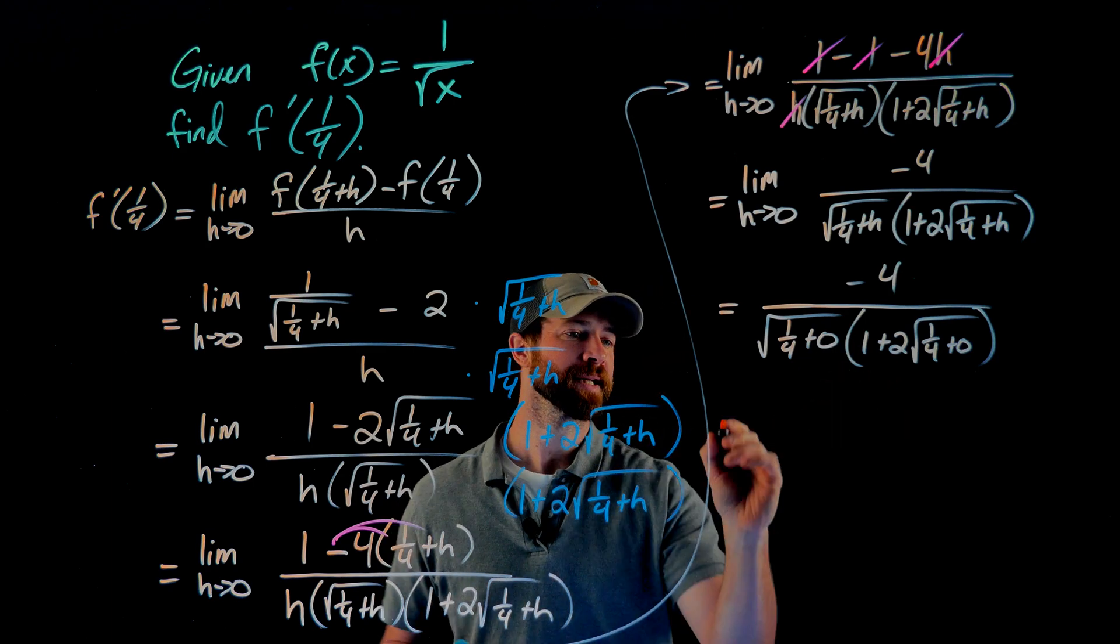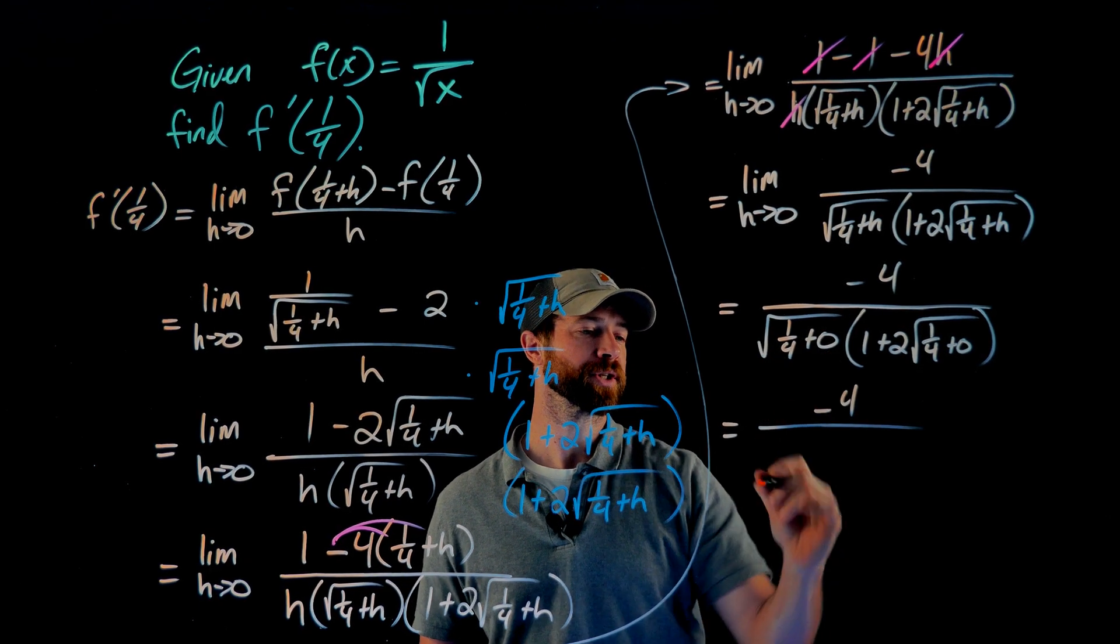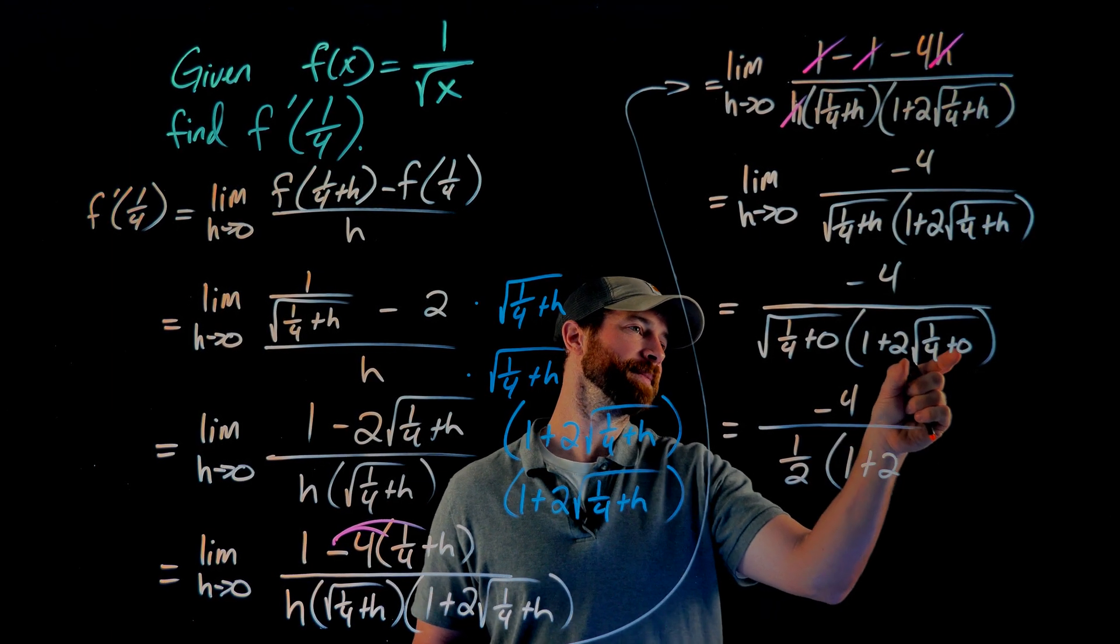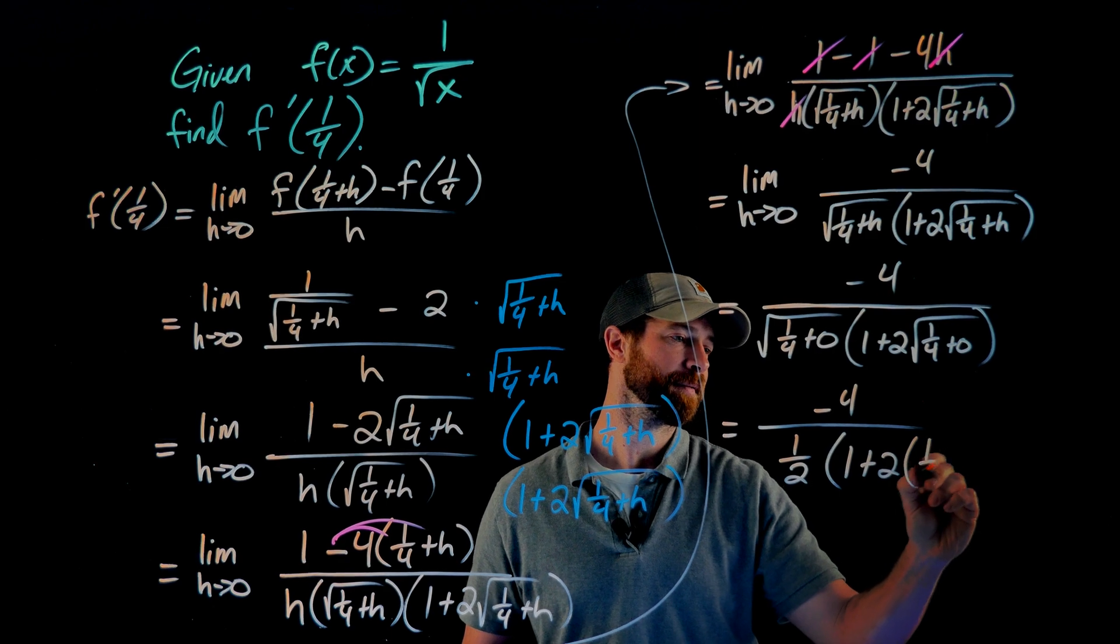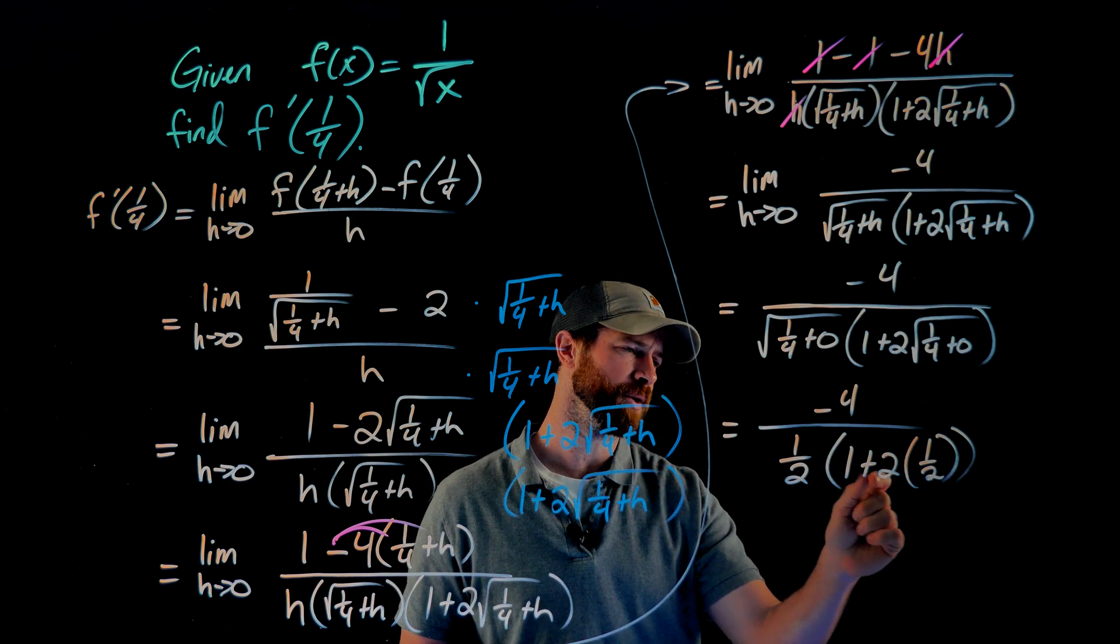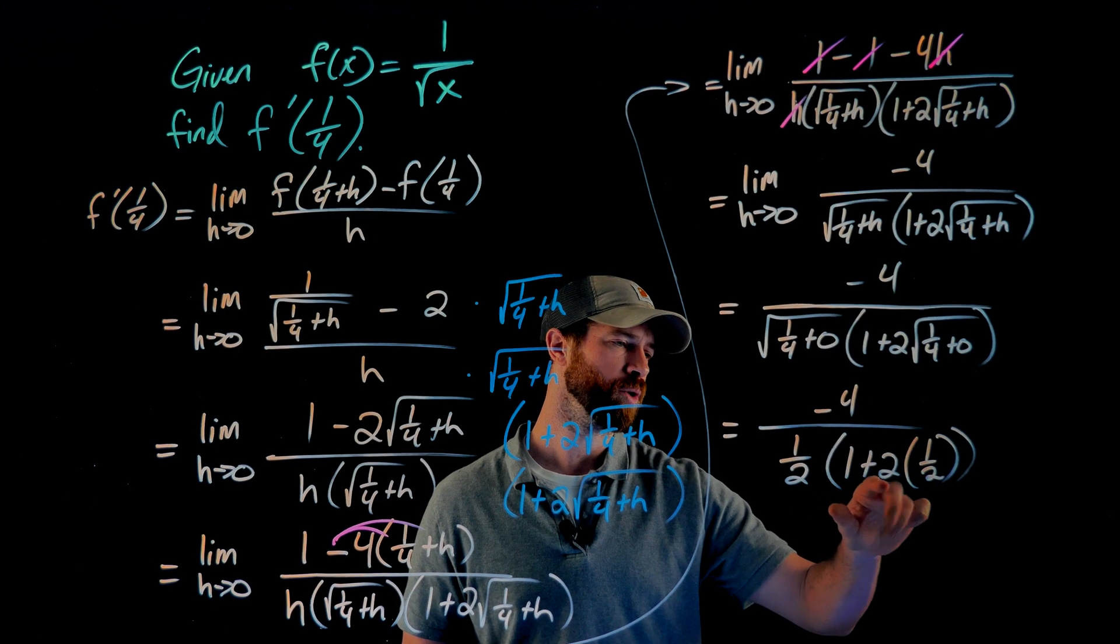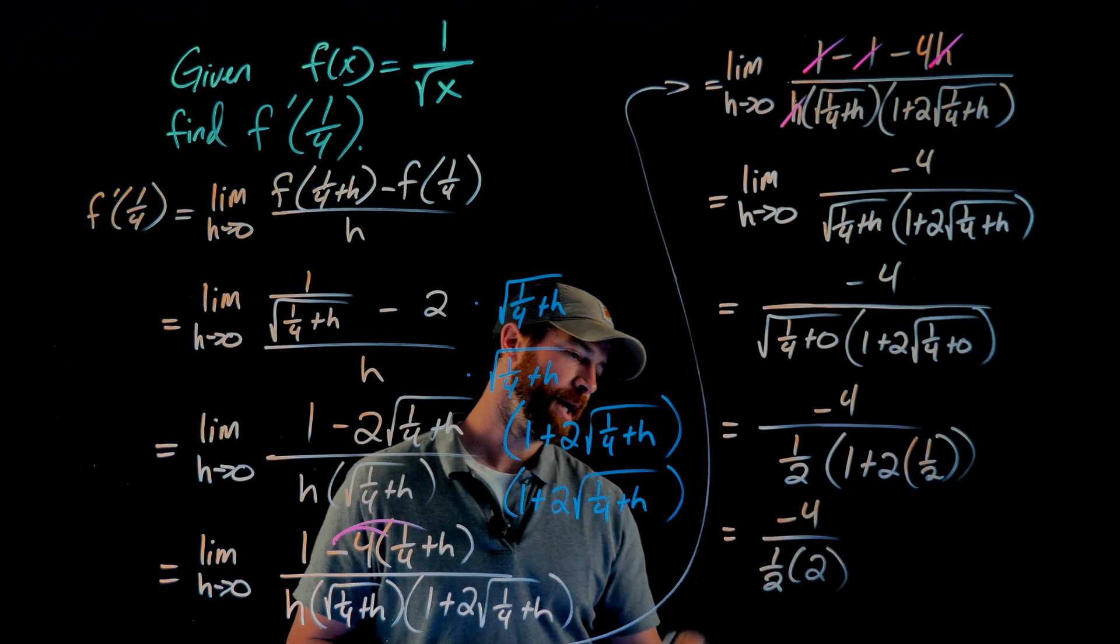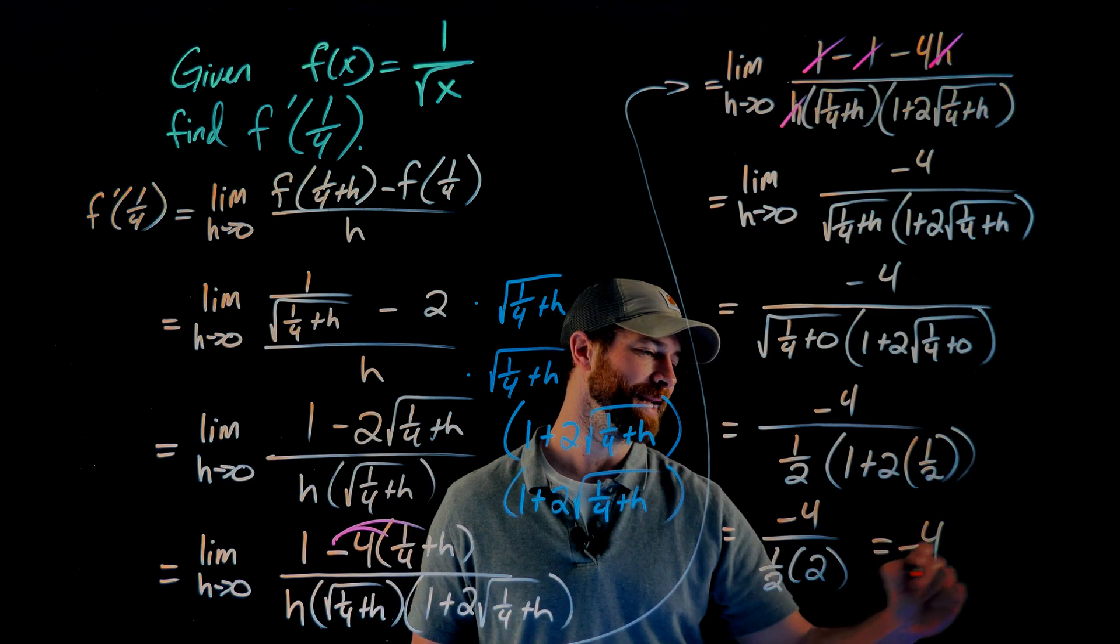Now to evaluate this, what I'm going to get up here in the numerator is negative 1/4. This is the square root of 1/4, the square root of 1/4 is 1/2. In this factor right here, I still have a 1 plus 2 times, in this case, this is a 1/4 plus 0, the square root of 1/4 is 1/2. And now I just need to finish off this arithmetic. And because I'm coming out of room here, I'm not going to show all these steps. But just to say, this is 2 times 1/2. So this is 1, 1 plus 1 is 2, which then gives me negative 4 over 1/2 times 2. This is 1/2 times 2 is a 1, meaning this is a negative 4 over 1, giving me negative 4.